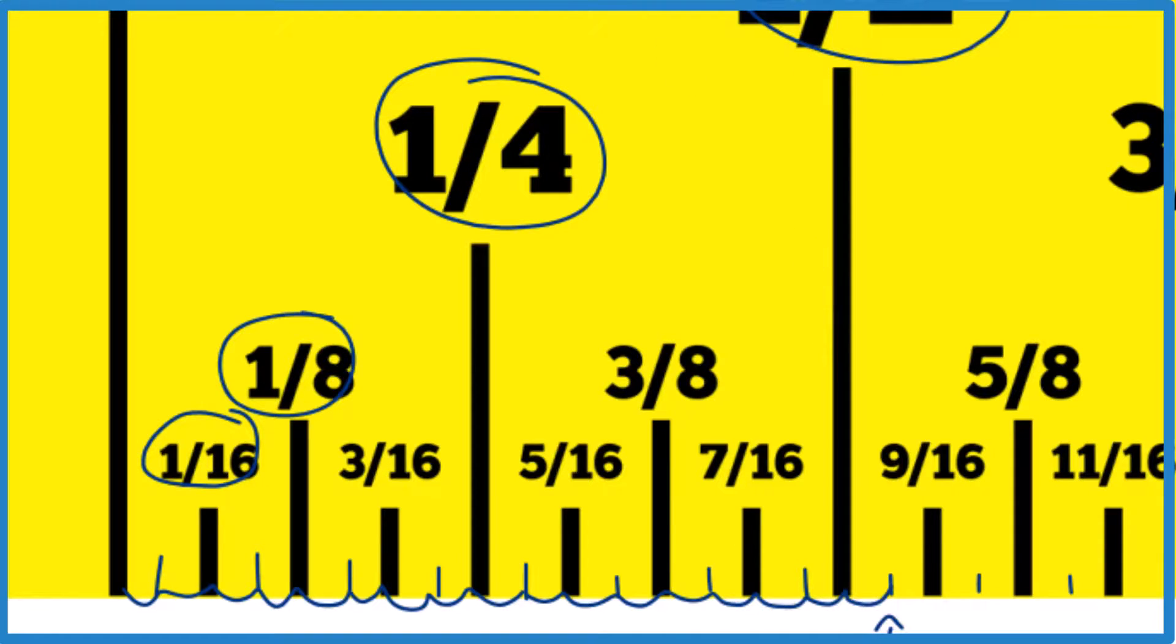And if you start with one half, just keep cutting that in half, you'll get your 32nds of an inch. And you can figure out where 17/32nds is on a ruler.